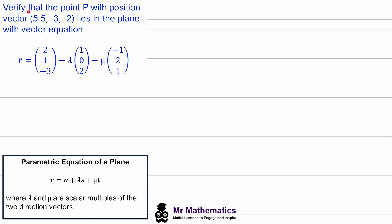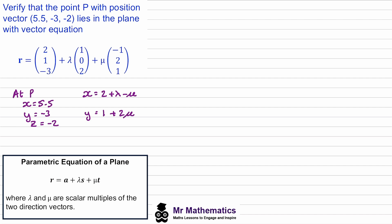In this question we've been asked to verify that the point p with a given position vector lies in the plane with a given equation. The x, y, and z values of p are identified. We need to find the general form of x, y, and z from the plane equation — for example, x will be two plus lambda minus mu, and z will be negative three plus two lambda plus mu. For this point to be on the plane, the values of lambda and mu must be the same for each of these equations.